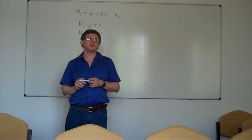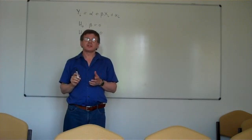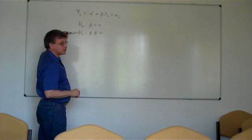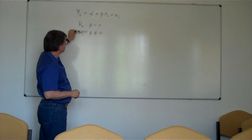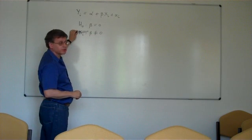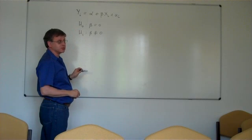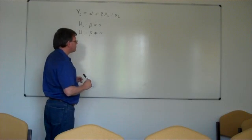Now should we use a one-tail test or a two-tail test? Well the answer lies in the nature of the alternative hypothesis. And the alternative hypothesis here should involve positive and negative deviations.